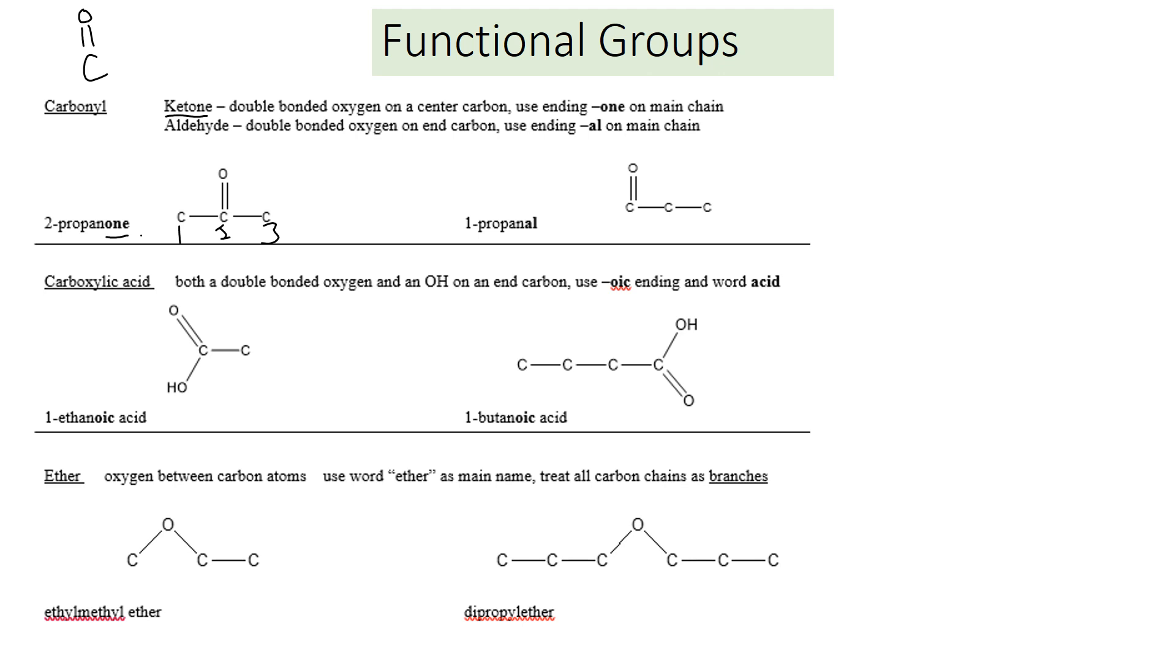It's not on one of the ends, it's on the interior. A ketone looks like R with the carbon, double bonded oxygen, and then another R group. Carbons on either side.